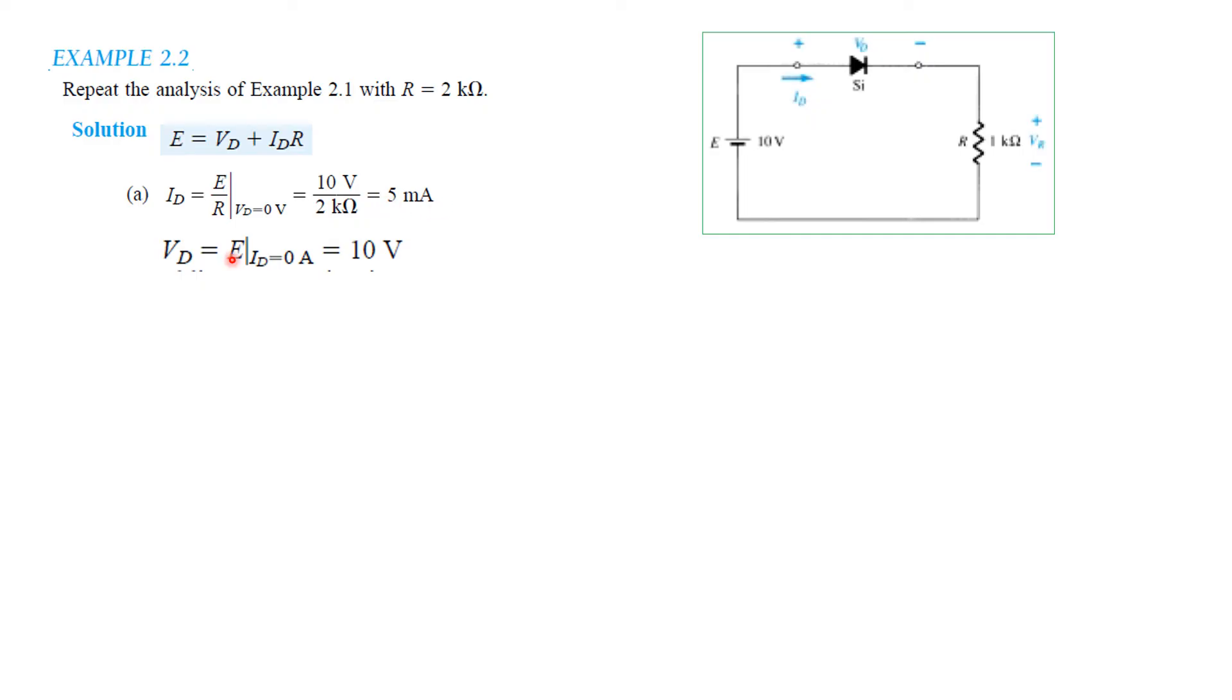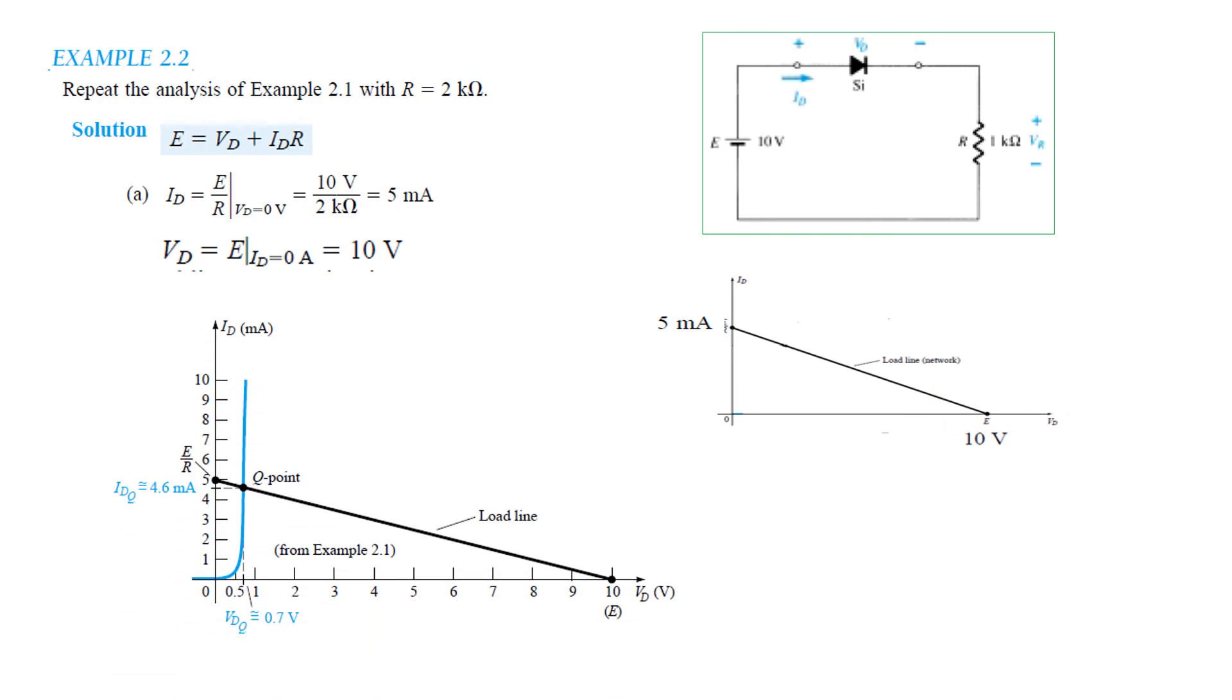And Vd is equal to E is equal to 10 volt. So these are the two extremes now. Draw this load line 5 milliampere and 10 volt and plug in the characteristics curve to find the Q point which is 4.6 milliampere approximately and the voltage here is approximately 0.7 volts. So these are the IdQ and VdQ.